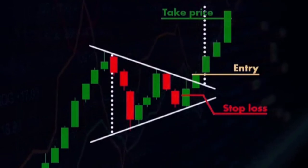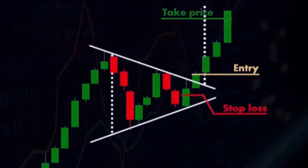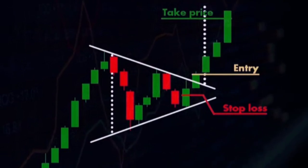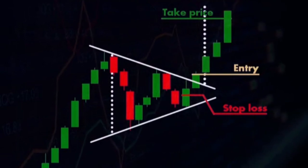The pattern has key characteristics. First, converging trend lines: two trend lines converge toward each other, where one connects a series of lower highs and the other connects a series of higher lows. Second, symmetry: the slopes of the two trend lines are approximately equal, creating a shape resembling a triangle. Third, volume: trading volume generally decreases as the price action moves toward the apex of the triangle.